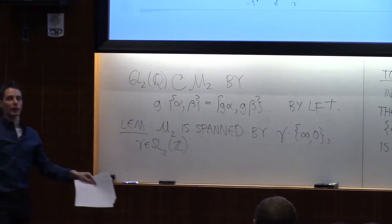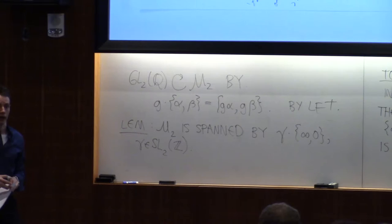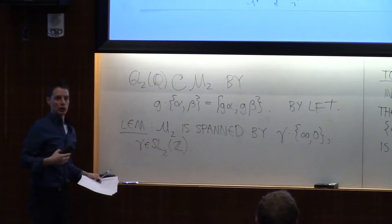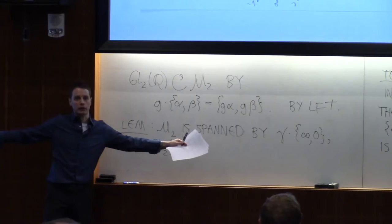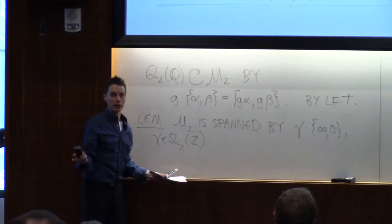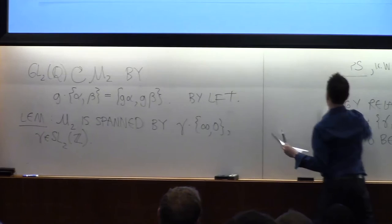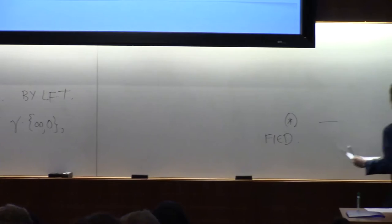M2 is spanned by a special kind of symbol, special kind of symbols. And these symbols are, I take the path from zero to infinity, but I'm going to write it as infinity to zero, so it makes the argument a little bit easier. And I have gamma act, where gamma is in gamma. Now, that's not obvious, this lemma. But it will be after I show you the proof.